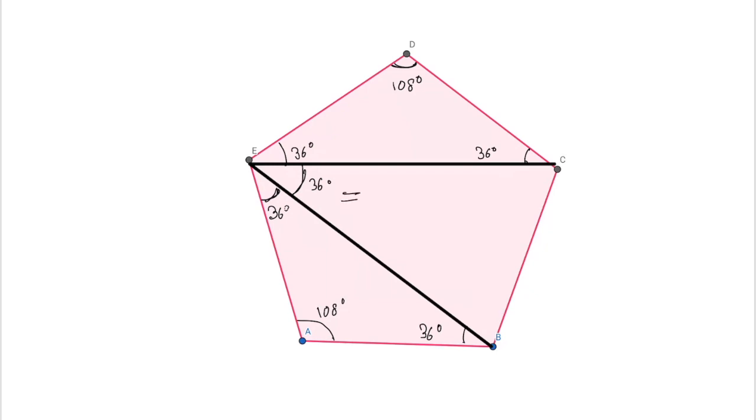Now the second case is, we need to work on angle C, angle E, angle B. This angle is 36 degrees, please note it down. The second point I want to use here is the line EC and the line EB are equal.